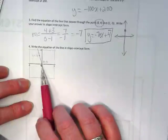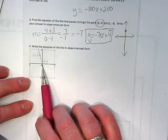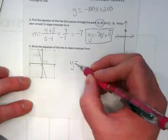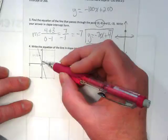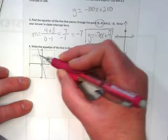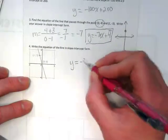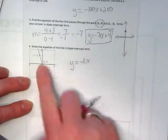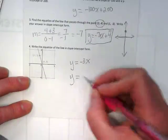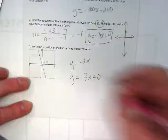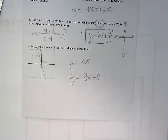And we're being asked here to write an equation in slope-intercept form from this line. Well, I'm going up 1, 2, 3, and to the left 1. So this is negative 3x. The y-intercept is 0, so I can just leave it like that. Or I could write it as negative 3x plus 0.